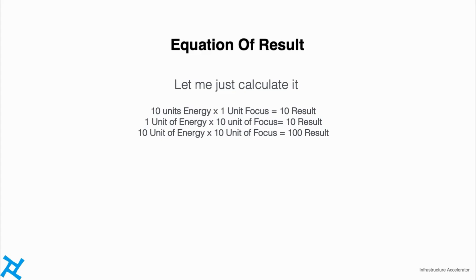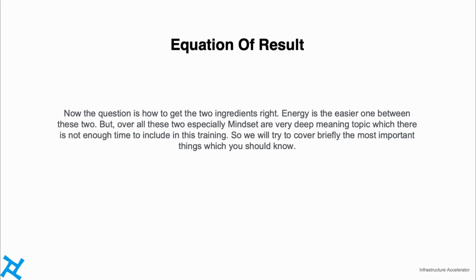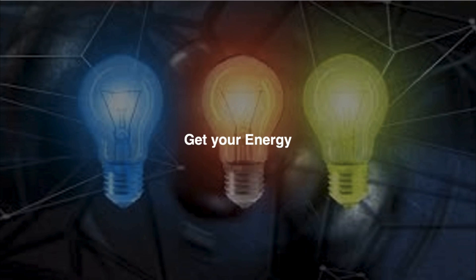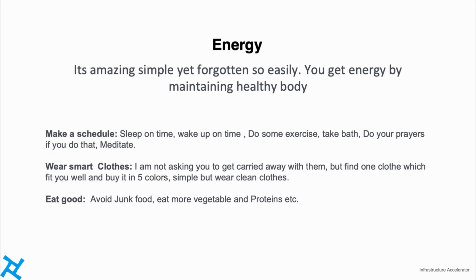It's that simple, but we often forget it. We know the ingredients for result are energy and focus, so the good question is: how can I make sure I have the right energy, and how can I make sure I have the right focus? Energy is the easier one between these two, but overall these two — especially the mindset required for focus — are very deep topics. I don't have enough time to cover everything in this training, so I'm picking the most important topics for you to understand in order to get results. Let's find out how you can get your energy.